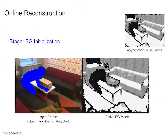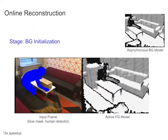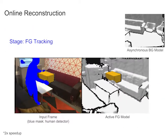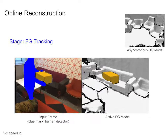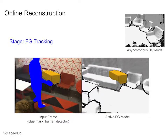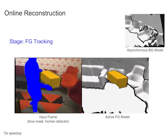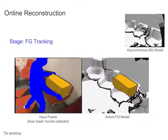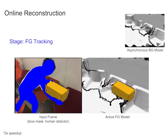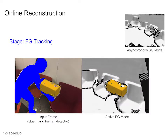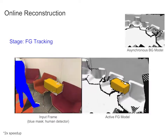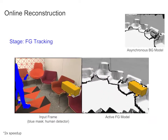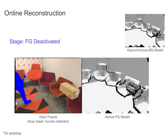Our method employs asynchronous background and foreground reconstruction as shown in the video. The short delay between the background and foreground modules allows the system to accumulate more free space information as a detection prior.